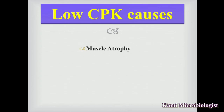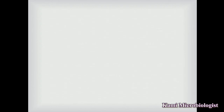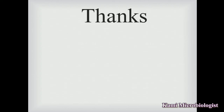Now for the main causes of low CPK. Low CPK is caused by muscle atrophy — meaning loss of skeletal muscle, where the muscles lose their mobility and movement. It can also be caused by hypothyroidism, which means a low level of hormones from the thyroid gland, and severe malnutrition, meaning a nutritional deficiency. Due to these conditions the CPK level will get low in the body.